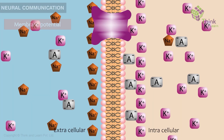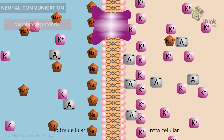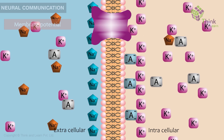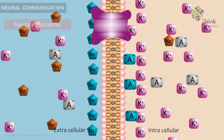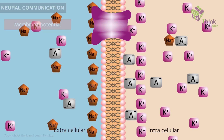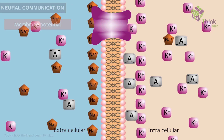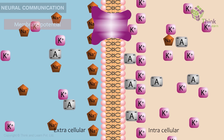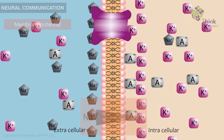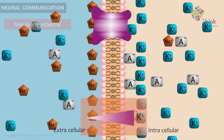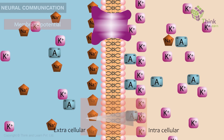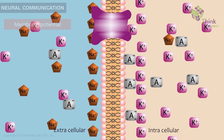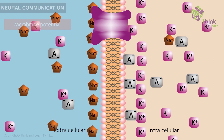All body cells display a membrane potential, which is a separation of positive and negative charges across the membranes, as discussed in the chapter on cells. This potential is related to the uneven distribution of sodium, potassium cations, and large protein anions between the intracellular and extracellular fluid.